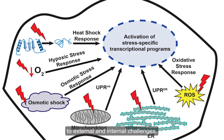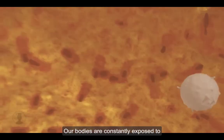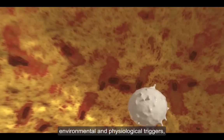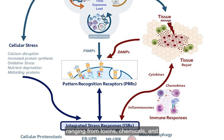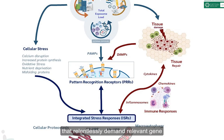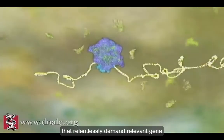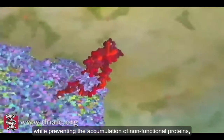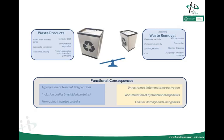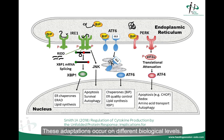Our bodies are constantly exposed to environmental and physiological triggers, ranging from toxins, chemicals, and microbes, to numerous internal stressors that relentlessly demand relevant gene transcription and translation of numerous proteins, while preventing the accumulation of non-functional proteins, or proteostasis, in the cells. This adaptation occurs on different biological levels.